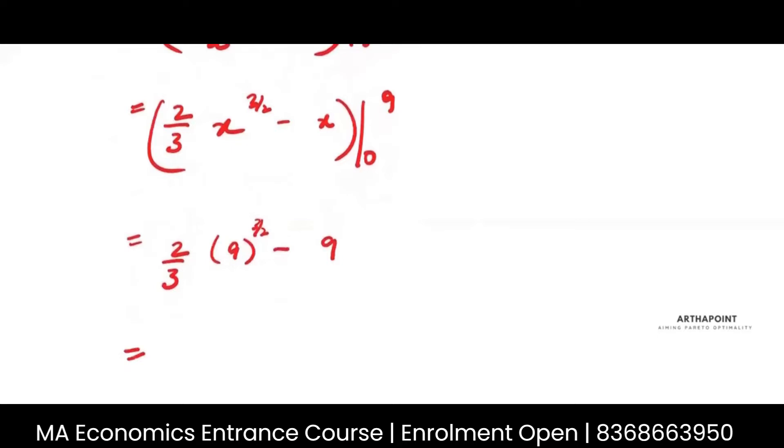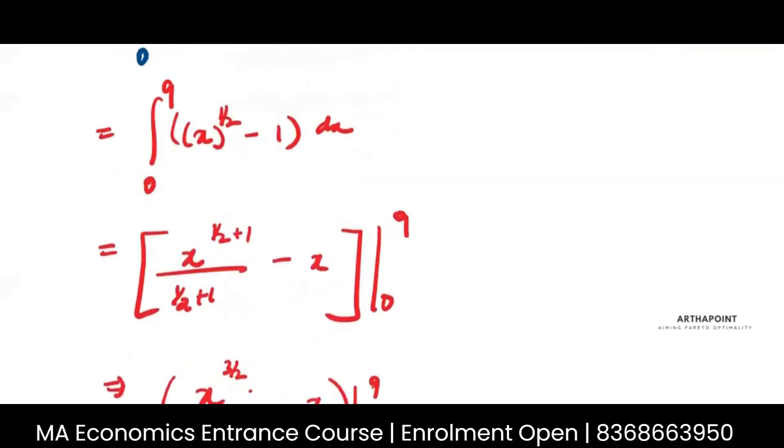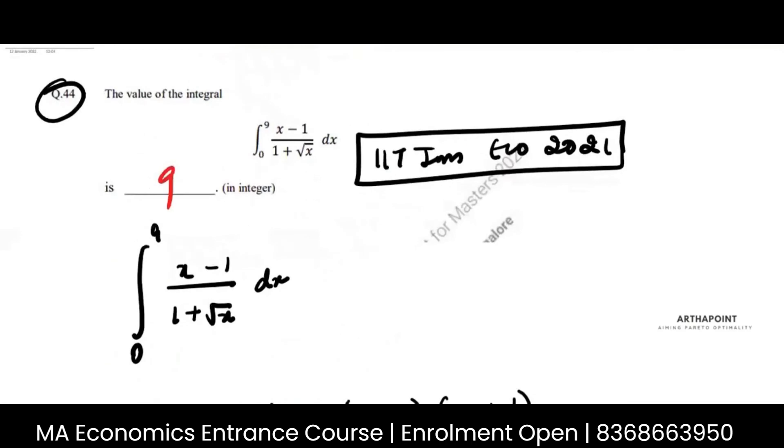Minus 0. When you put 0 in x, it would be 0, so not considering that. And this would be 2 times 9 minus 9, 18 minus 9, which is 9. So the answer to this question is 9.